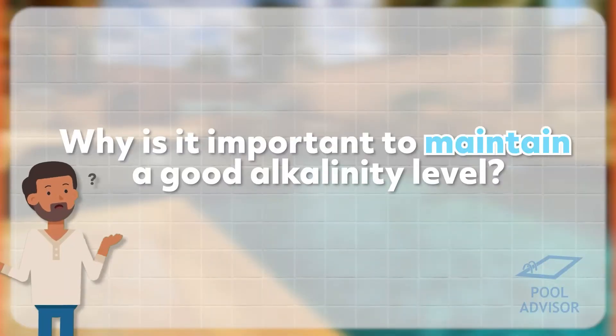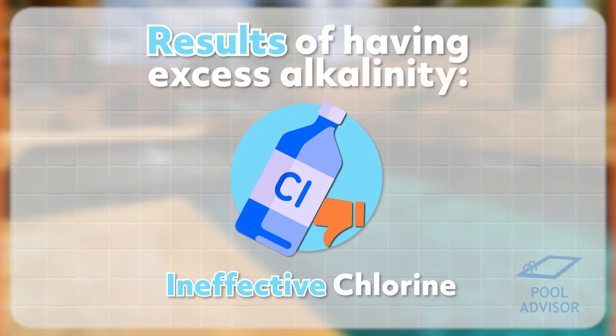So, why is it important to maintain a good alkalinity level? Well, high alkalinity levels can be a problem for a number of reasons. The first of which is calcium scaling. High alkalinity means that you're going to have more carbonates in the water, and calcium scale usually consists of calcium carbonate. So, the more carbonates you have in the water, the more likely you are to develop calcium scale on your pool surfaces and in your pool equipment.